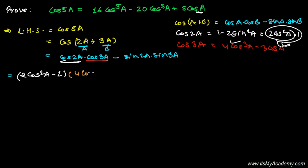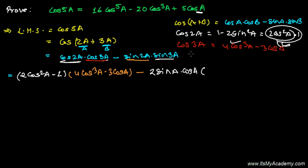So it's going to be (2cos²a − 1)(4cos³a − 3cos a), minus now the sine 2a formula: sine 2a is 2 sin a cos a. After that we need the sine 3a formula as well. Sine 3a formula — sine comes first — it's 3 sin a minus 4 sin³a.